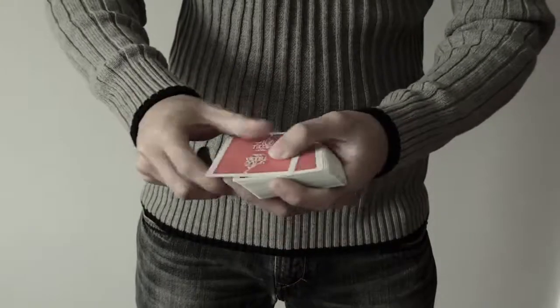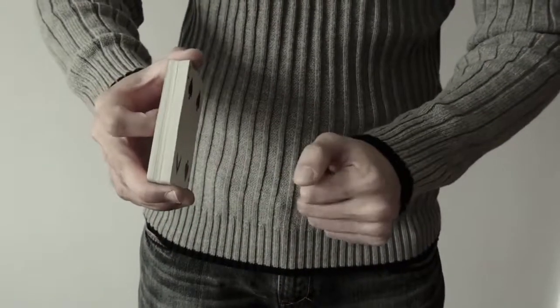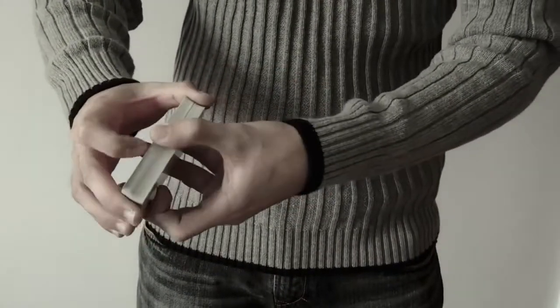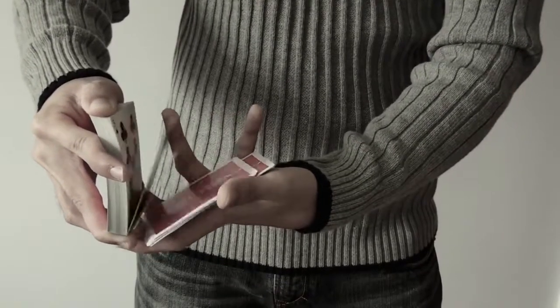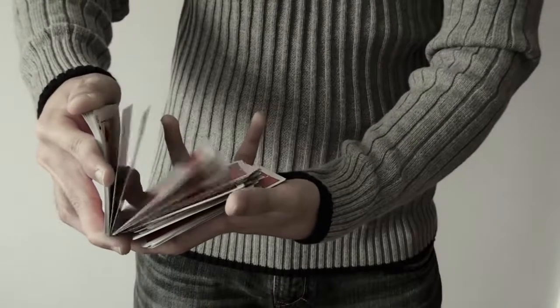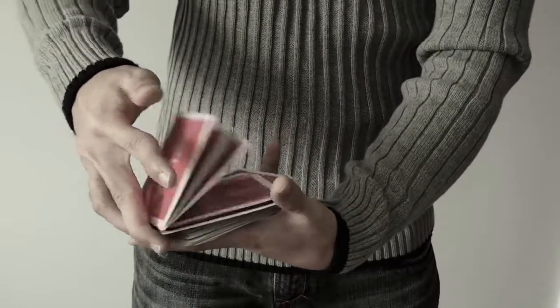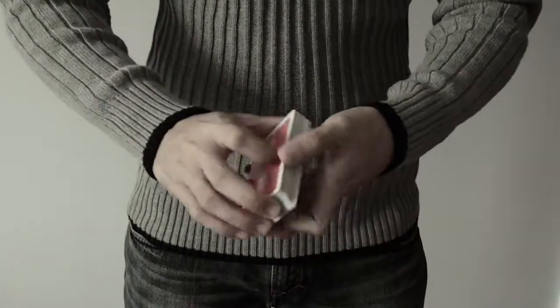And for the dribble variation, part of it is actually dribbling out from the top. Just like this, dribble from the top. So practice first like this. Ok, practice like this. So to get the dribble down, ok.